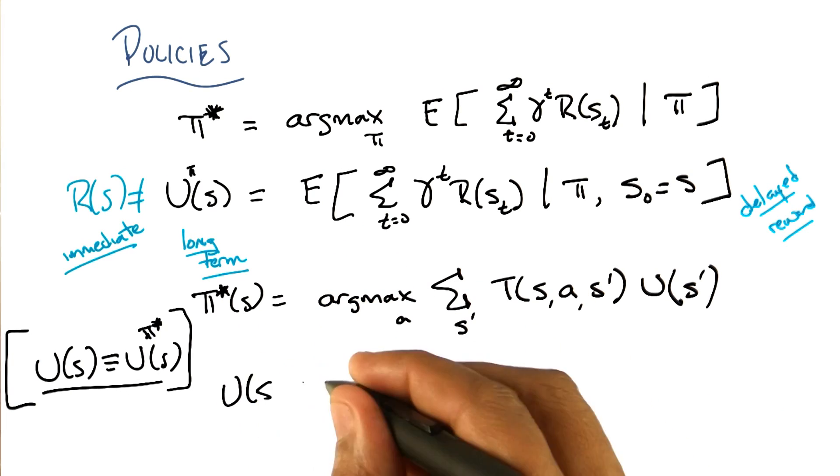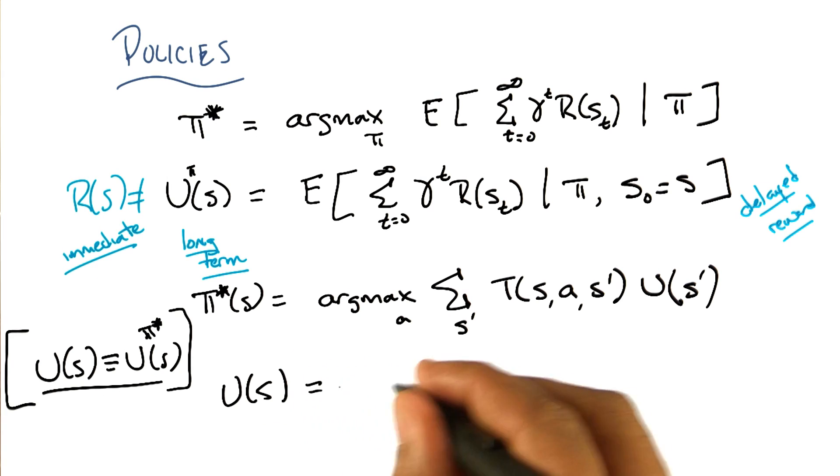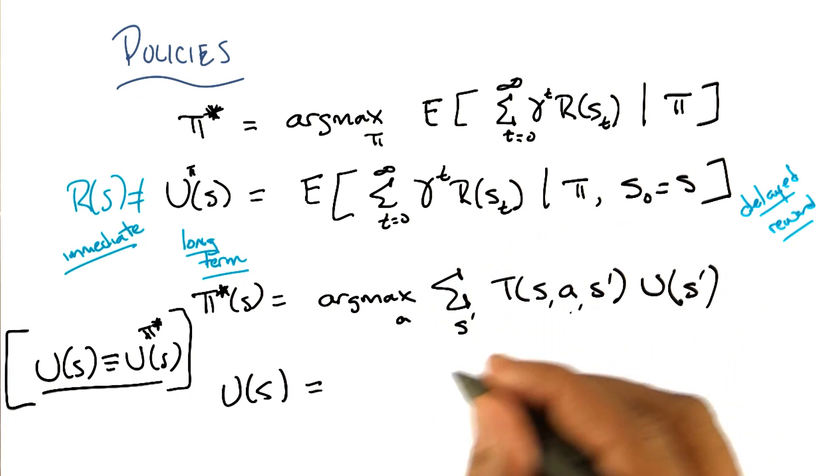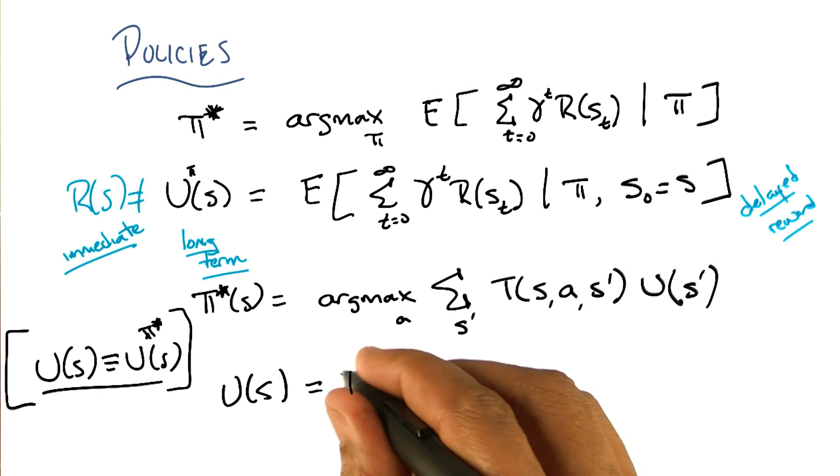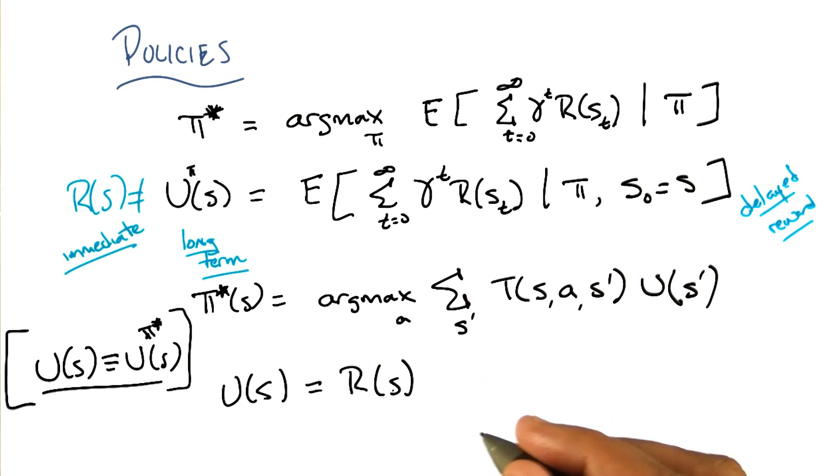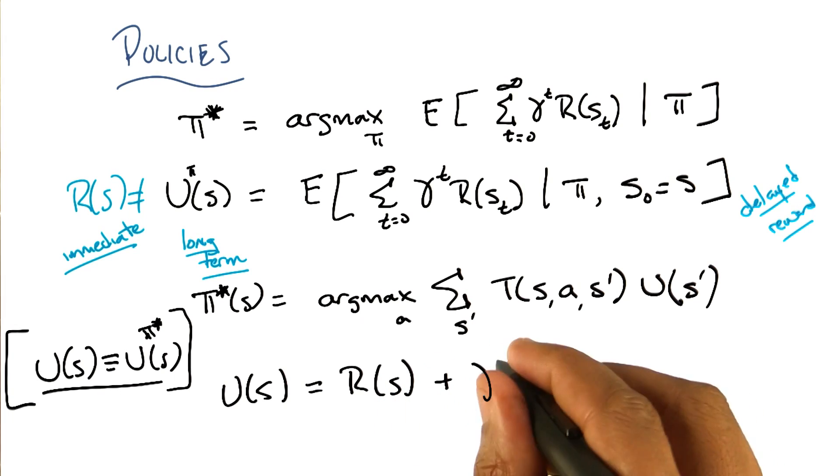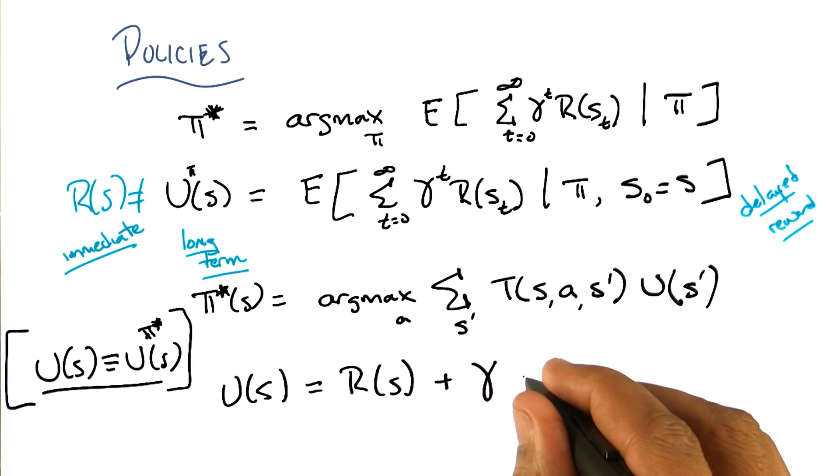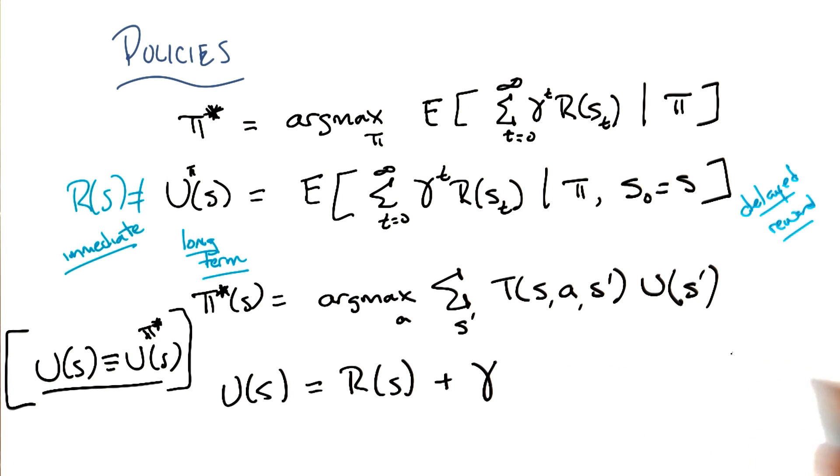So then the true utility of a state, S, is then, I'm just basically going to unroll the equation for utility. It's the reward that I get for being in that state. Plus, I'm now going to discount all of the reward that I'm going to get from that point on. Got it? All right.